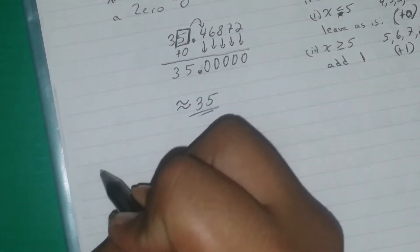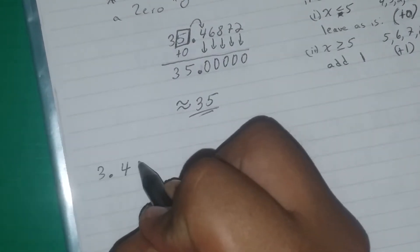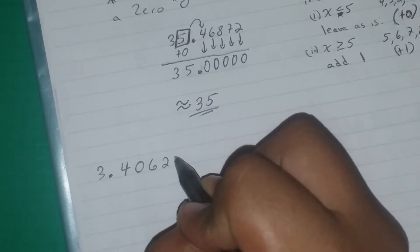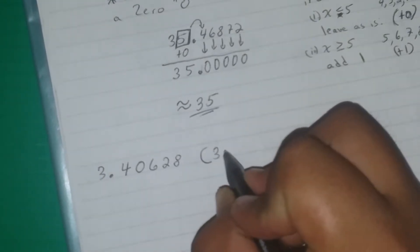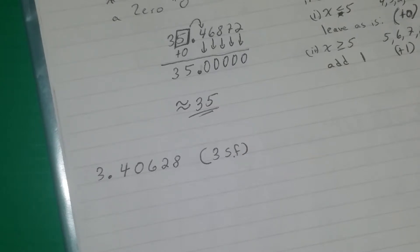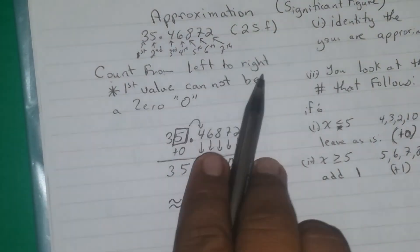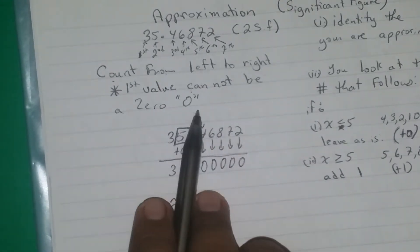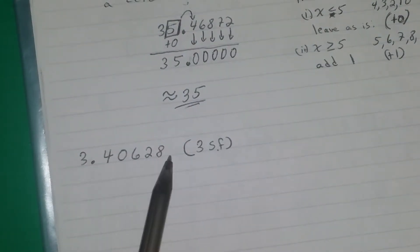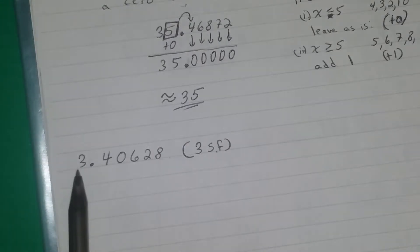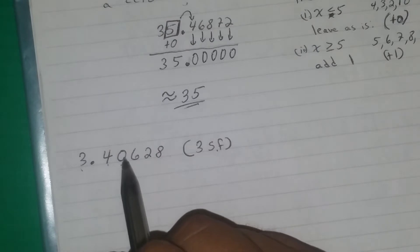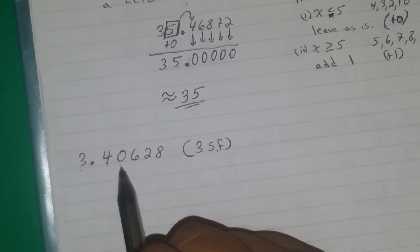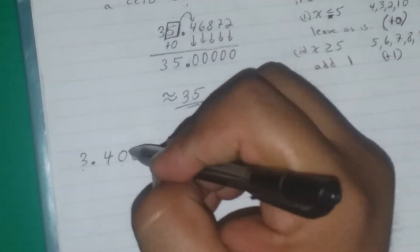Let's do another one. Let's say you have 3.40628, and the problem is asking us to approximate to 3SF. Which number would be my third significant figure? We count from left to right, and our first value cannot be a zero. The first significant figure is 3, second is 4, third significant figure is 0. Notice that the 0 is after you have started counting, so it counts as a significant figure.